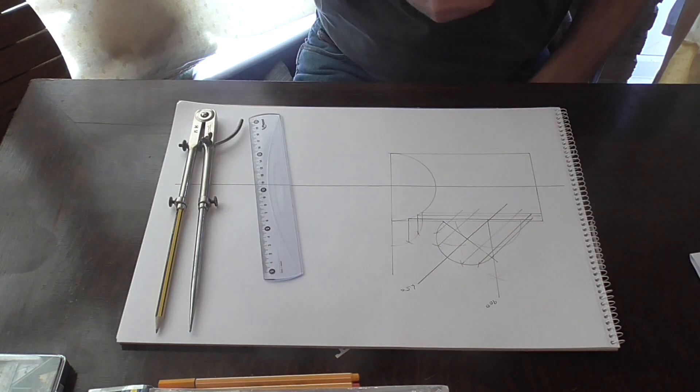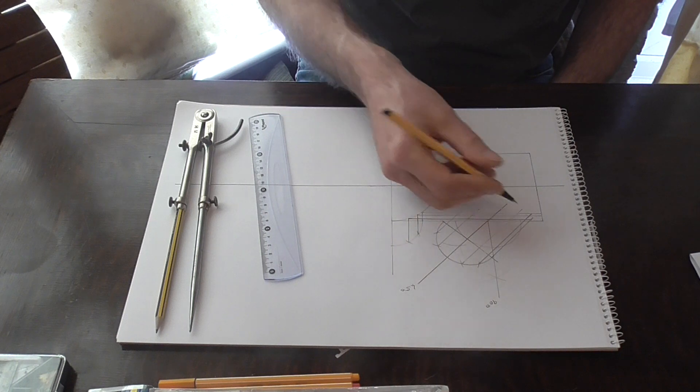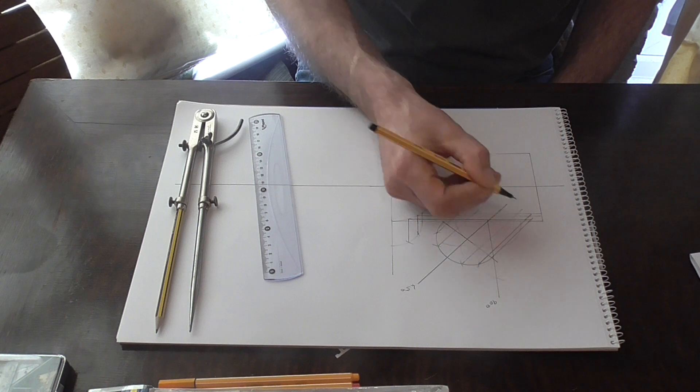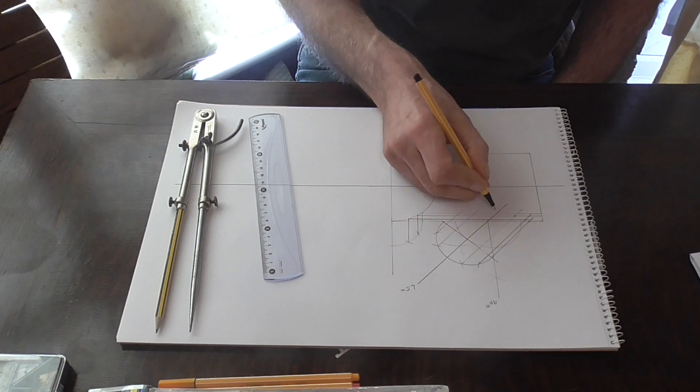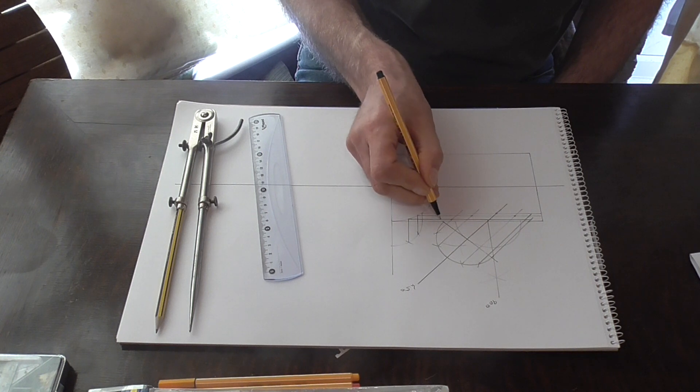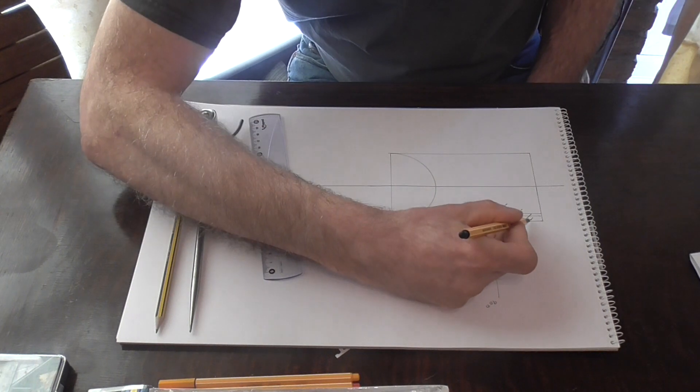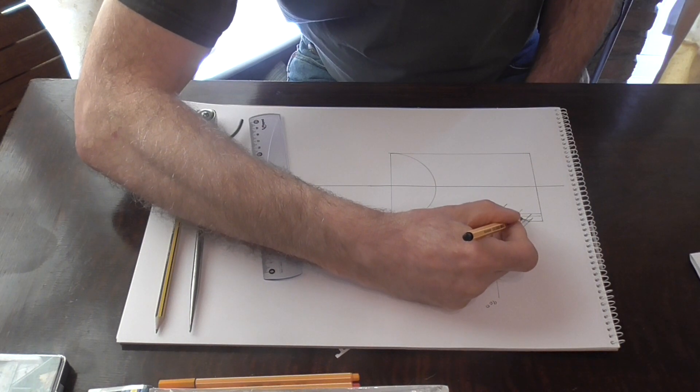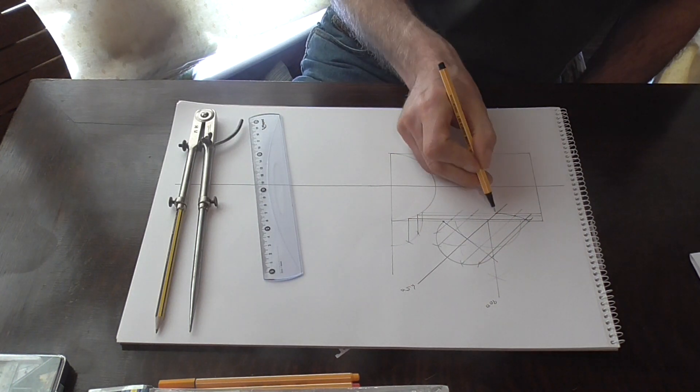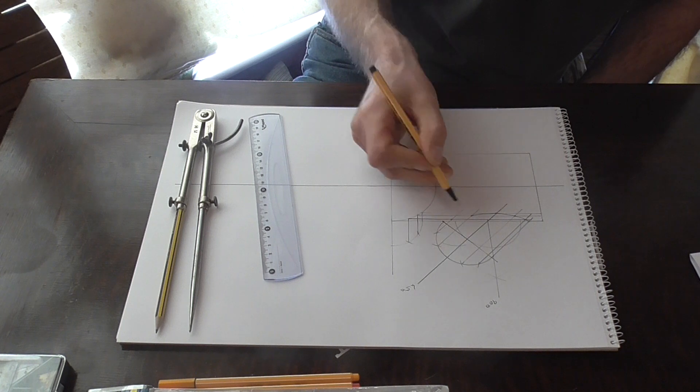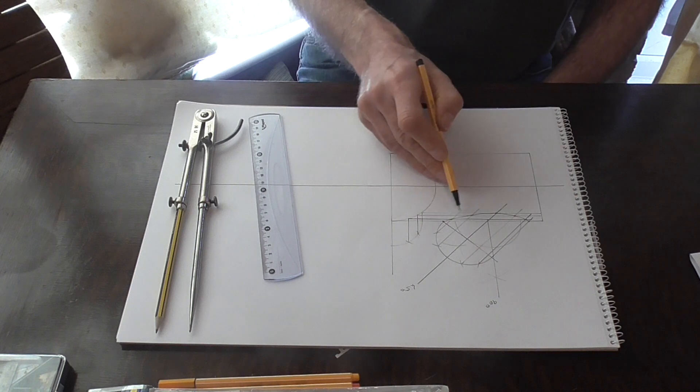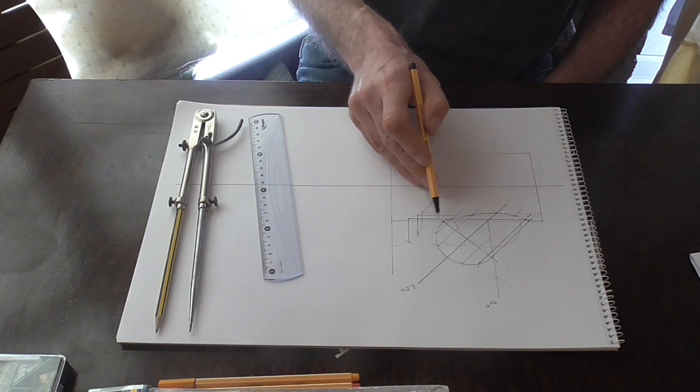So once we've done that all we need to do now we've got a grid. We just plot the points where they connect on their lines. That's one there, there, there, in the center, back up again, and there. And we just join all those together.